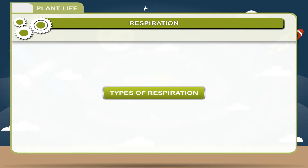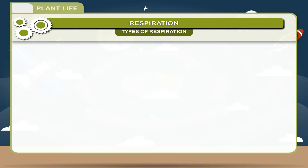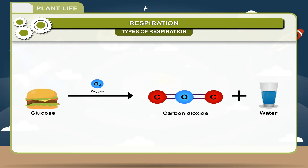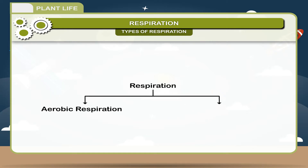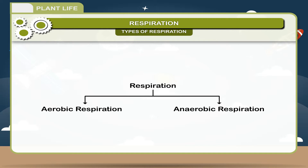Types of respiration. Respiration is a process by which food, glucose, is broken down into carbon dioxide and water using oxygen. On the basis of oxygen use, respiration is divided into two types, because there are some living creatures who do not use oxygen during the breakdown of food.